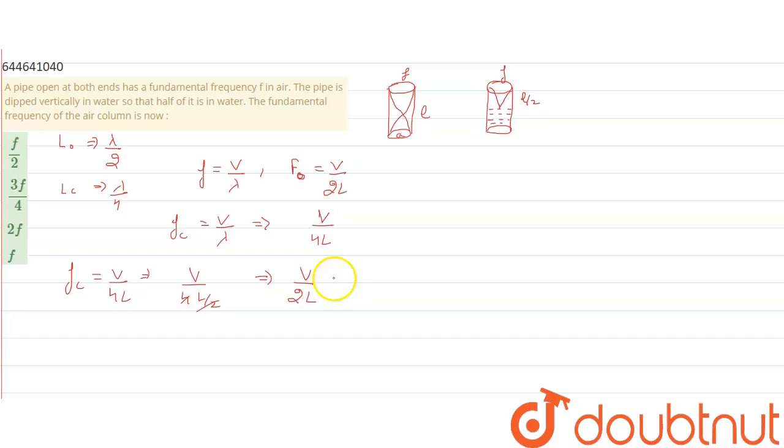So here we can say the fundamental frequency for the closed pipe, that will be second and that is, for the one is same. After comparing 1 and 2, we can recognize that frequency for open is equal to frequency for close.